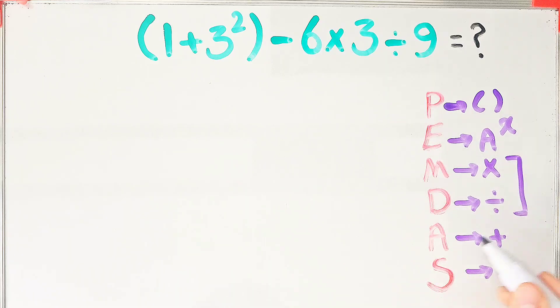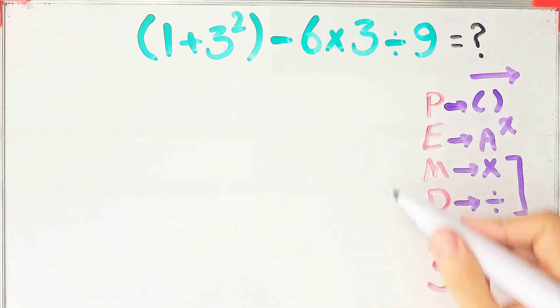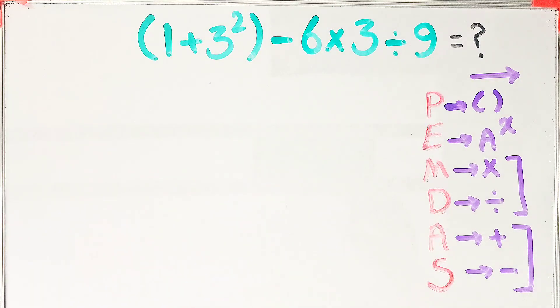Multiplication and division are of the same level of priority, also addition and subtraction are of the same level of priority. When we have both in an expression, we start from the left and simplify the question. According to this rule, first we simplify the parentheses.